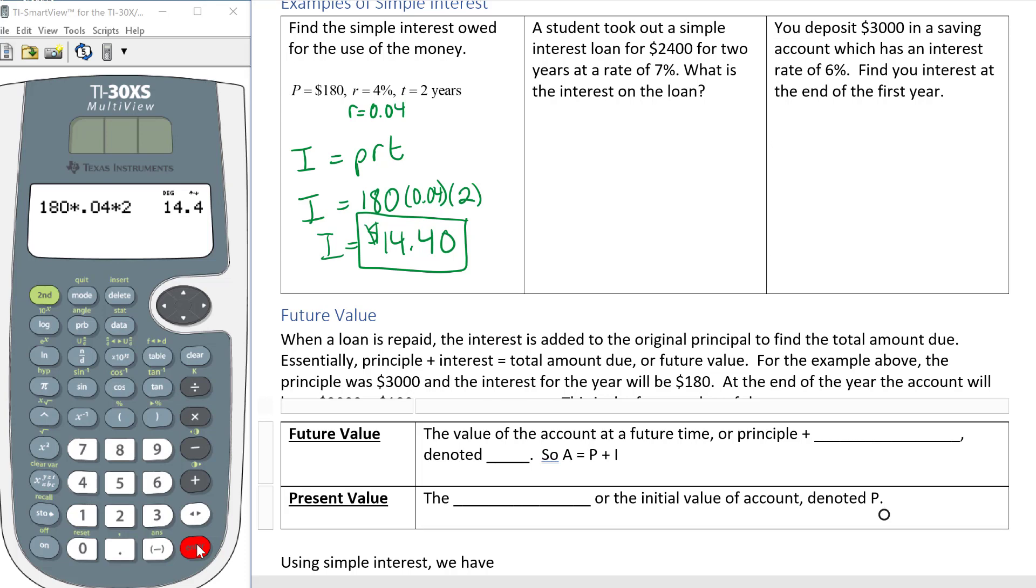Next, a student took out a simple interest loan for $2400 for 2 years at a rate of 7%. What is the interest on the loan? In this case it's a little trickier because you have to come up with all of the values yourself. So we have I, P, R, and T.